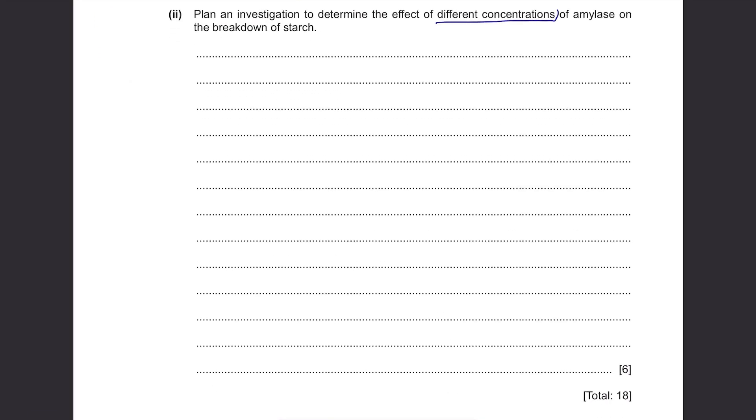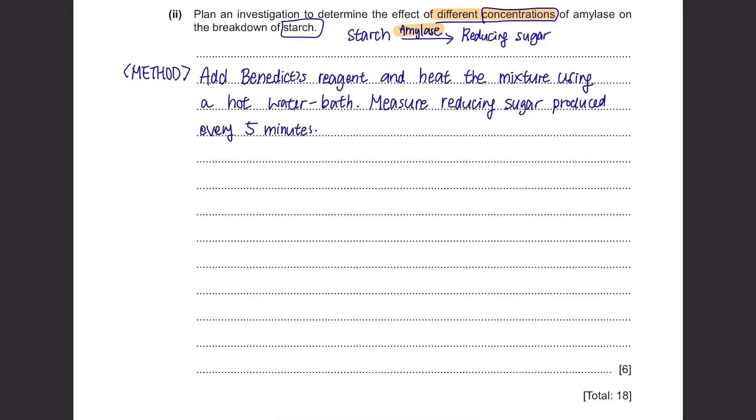Part B(ii): Plan an investigation to determine the effect of different concentrations of amylase on the breakdown of starch. Amylase is going to break down starch and produce reducing sugar and we can measure the reducing sugar produced to find the effect of different concentrations of amylase. There is a format to follow for these planning and investigation questions. First, you write the method of the experiment. Add Benedict's solution and heat the mixture using hot water bath to measure reducing sugar produced every 5 minutes. It doesn't have to be 5 minutes, you can choose your own time intervals as long as they make sense and are not like every 5 hours when the reaction would have probably ended. You can see that the method isn't very long. The maximum amount of marks you can get from method is 2 marks so don't write a whole essay on it. Adding Benedict's reagent at time intervals is 1 mark. And using a hot water bath is another mark.